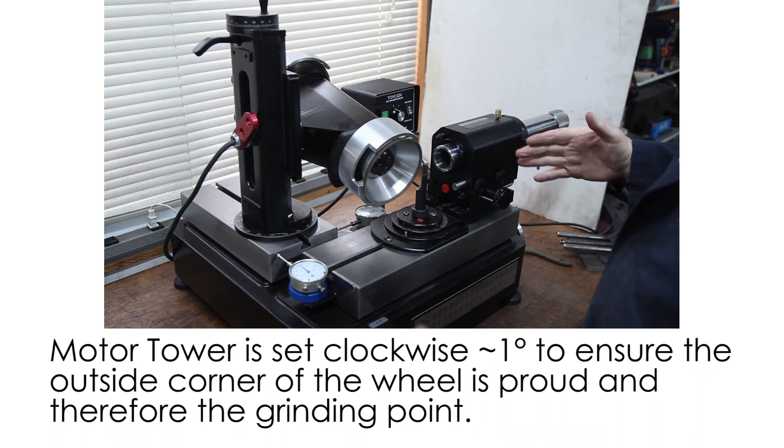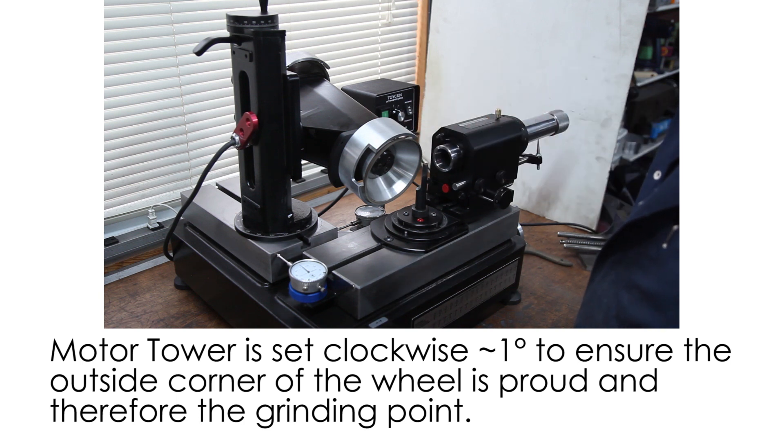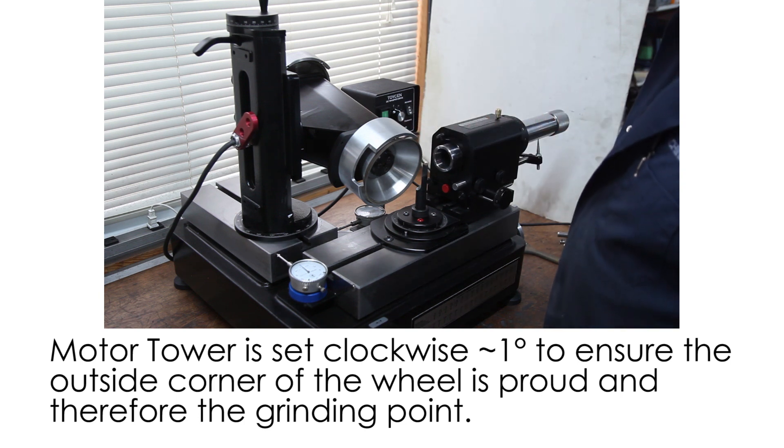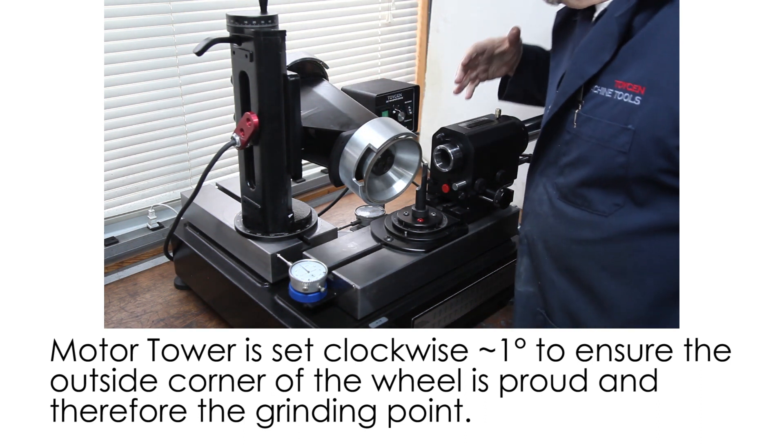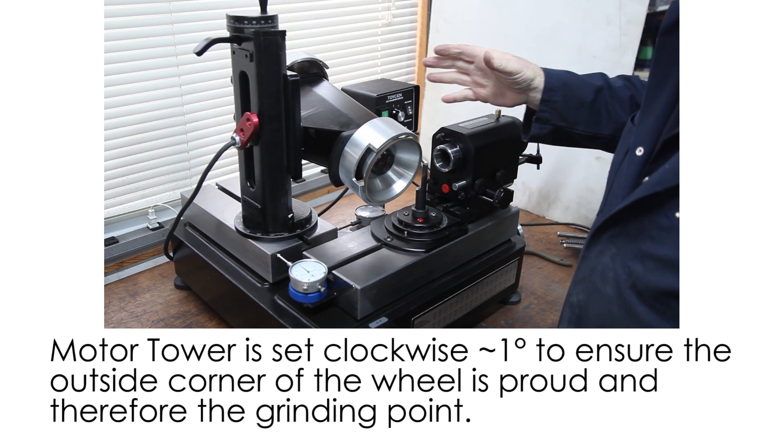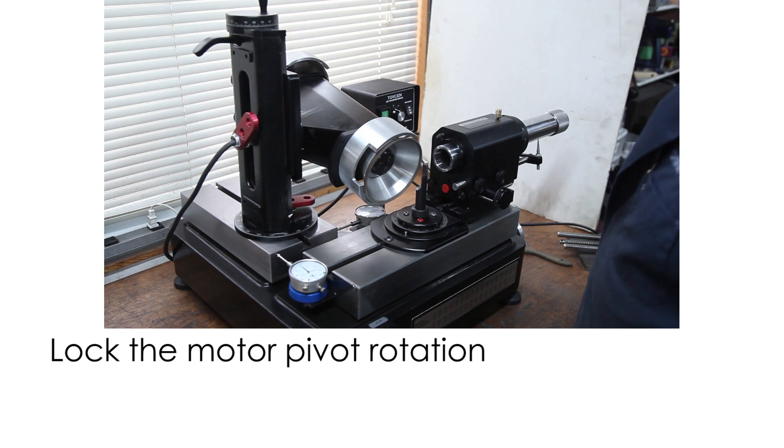In our truing video you saw that we ground a little bit of shape into the wheel like that. We want this corner to be proud so we know exactly what part of the wheel comes in contact with the tool. So we'll be rotated clockwise about a degree or so to complement that grind we put on there.